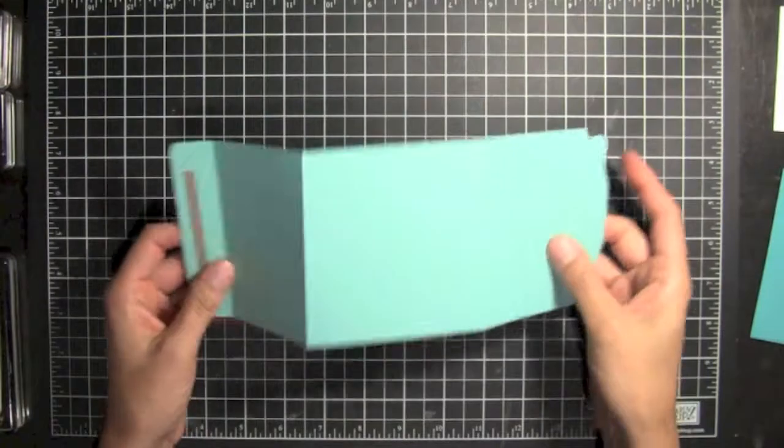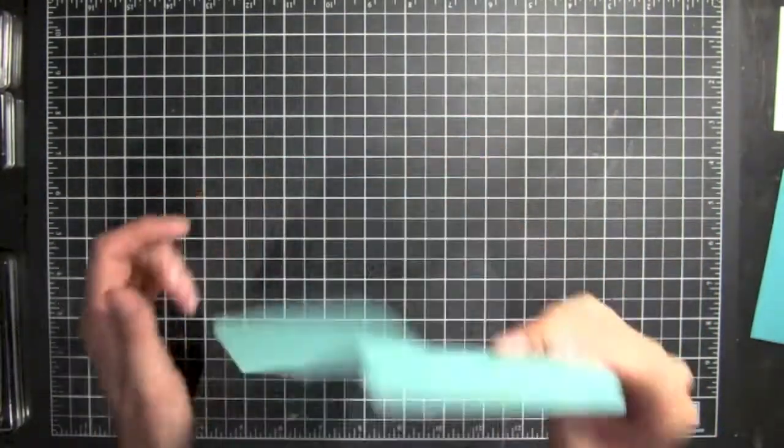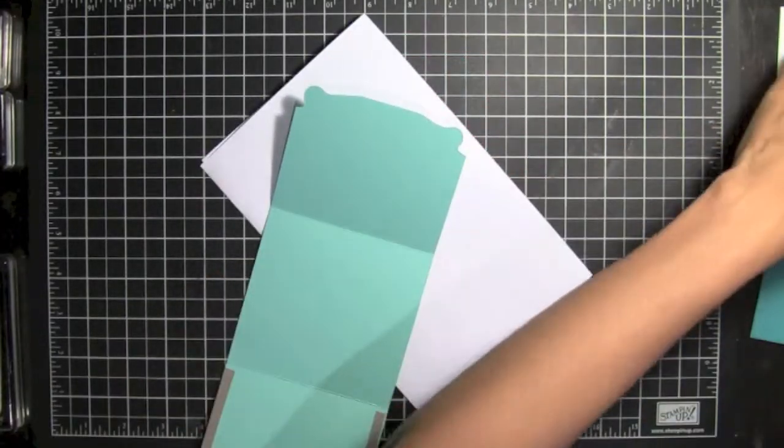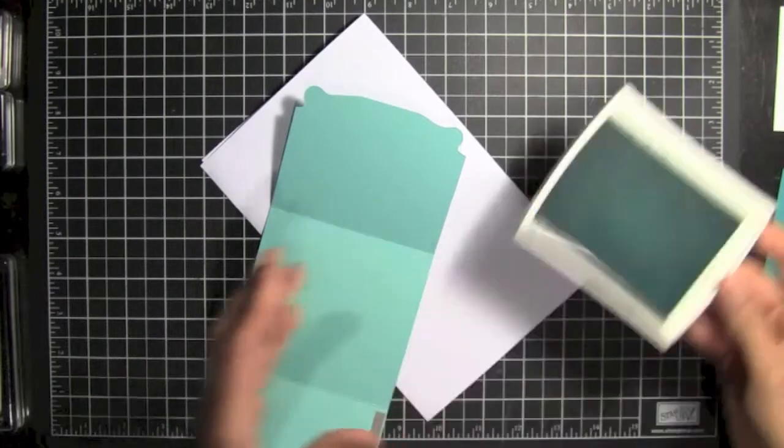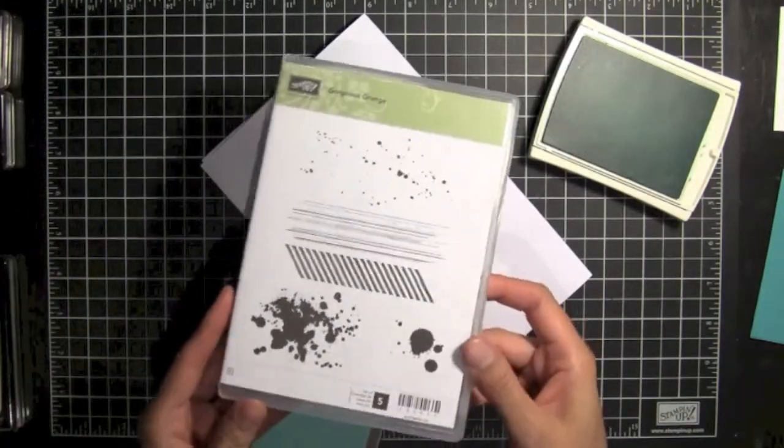And so I have a piece of Coastal Cabana, and I've already put my sticky strip on it. But I'm going to stamp it first, and I'm going to start with Coastal Cabana. And I'm going to use the Gorgeous Grunge stamp set. And this is new.